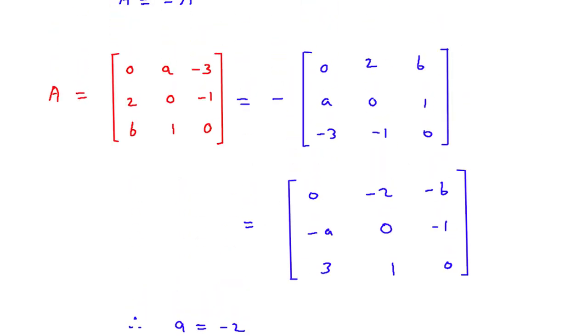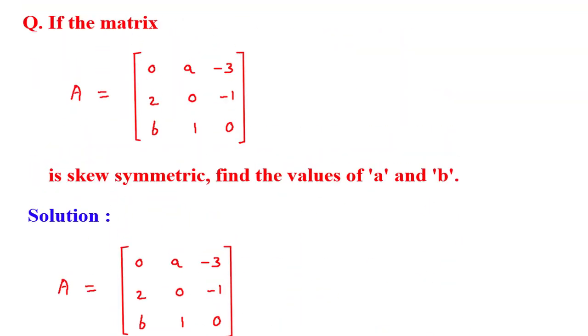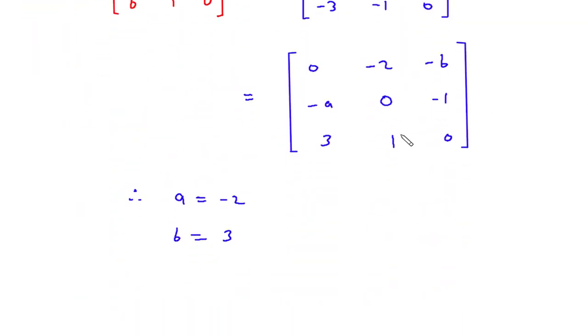So this is our final answer. We have to find the value of a and b, so therefore a is equal to minus 2 and b is equal to 3.